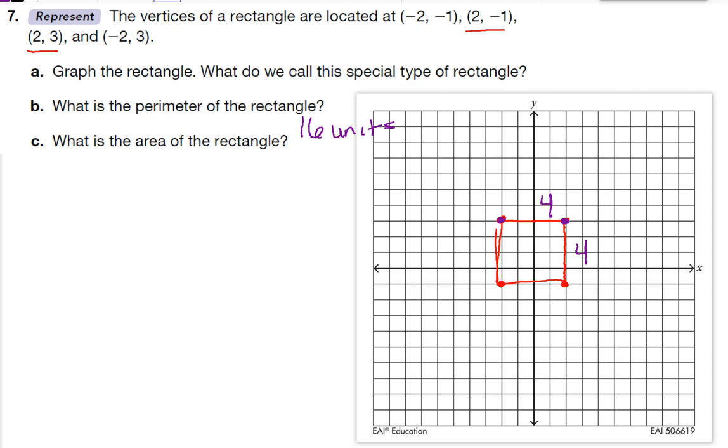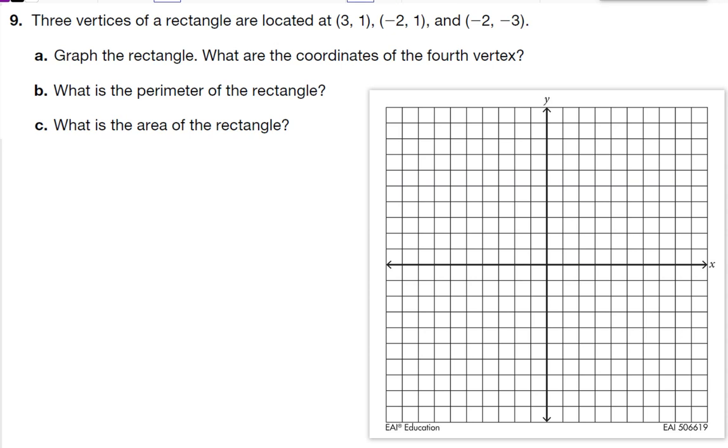Now we need to find the area. Well, area is length times width, so 4 times 4 is 16. Now since all the sides are the same, we know that this rectangle is really a square.